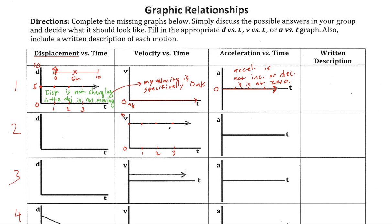I am moving because I have velocity, but I'm not speeding up or slowing down - I'm moving at a constant rate. So my distance is changing, just changing at a constant rate. My velocity is constant, and since it's not constant at zero but at some other number, the object is moving. I only care about the concept now, not the graph itself.